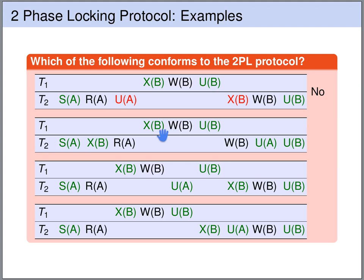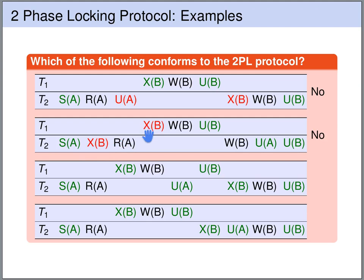In the second schedule, each transaction has unlocks only after all locks, so we have two phases in principle. However, transaction 2 obtains an exclusive lock on B which is not released, and then transaction 1 tries to obtain an exclusive lock on B as well. Since one transaction holds an exclusive lock, no other transaction can hold any lock on that object. So these two locks conflict, and this schedule also does not adhere to two-phase locking.